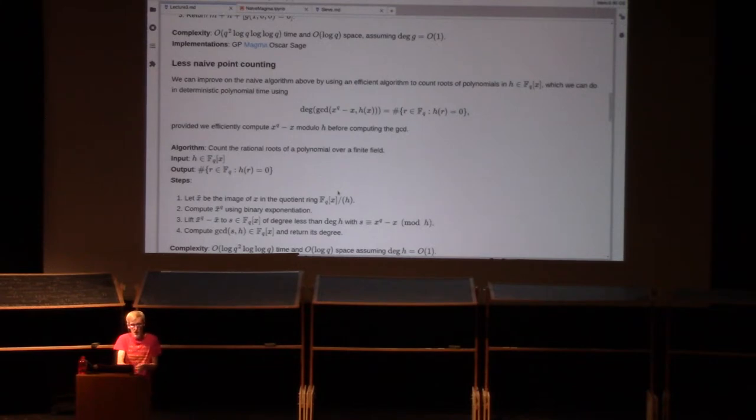Then once you've done that, we take our polynomial, the image of x^q minus x in our quotient ring that we've computed by subtracting x-bar from x-bar to the q, and then lift it back up to F_q[x]. We're now going to get a polynomial of degree less than h that is congruent to x^q minus x mod h. From facts we know about GCDs, we can plug that polynomial directly into the GCD where we had x^q minus x, and we're going to get exactly the same answer.